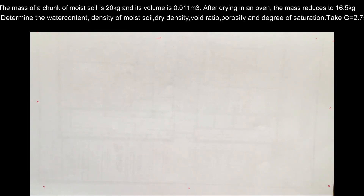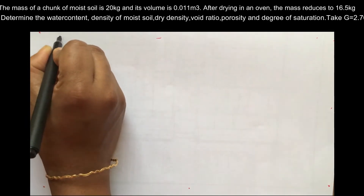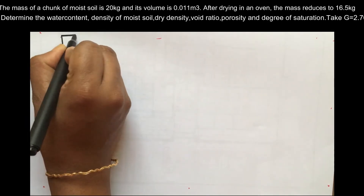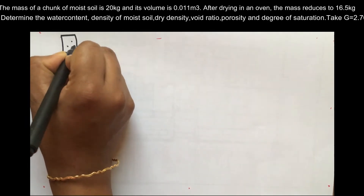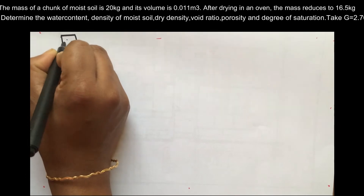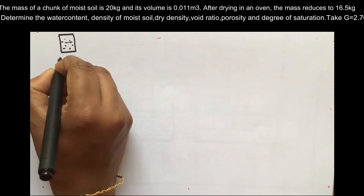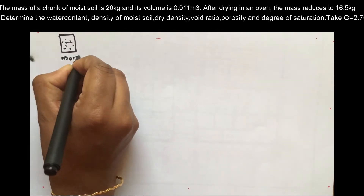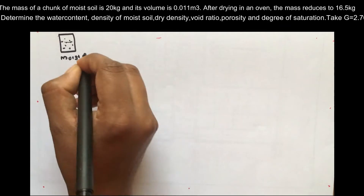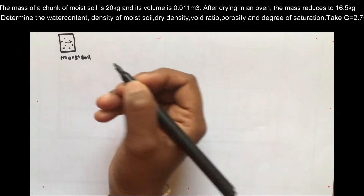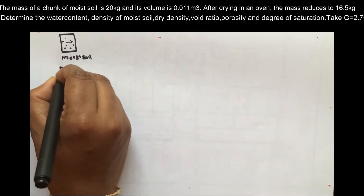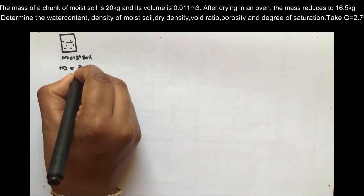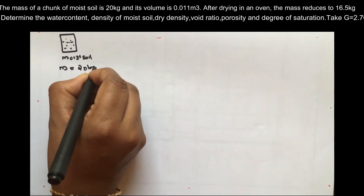First, the mass of a chunk of moist soil is 20 kg. There is moist soil consisting of solid particles and water. The mass of the moist soil is 20 kg.